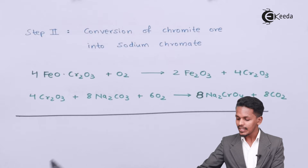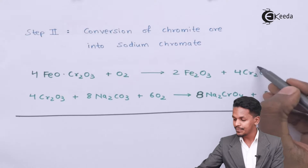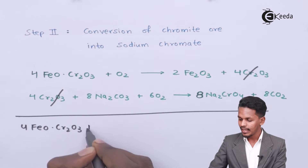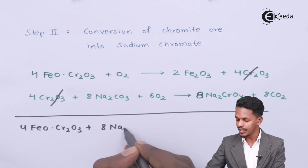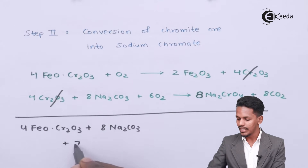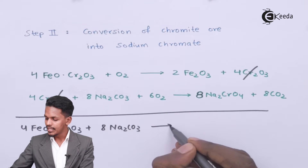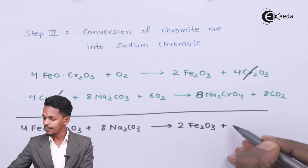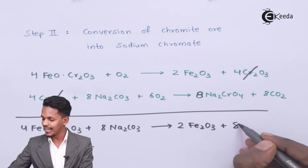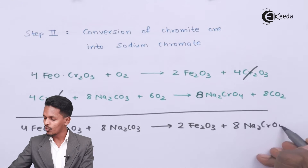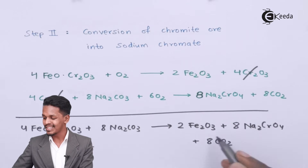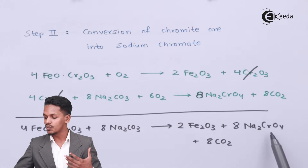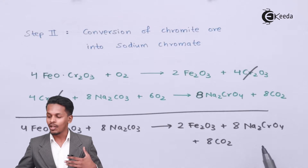The overall reaction is: 4 moles of FeOCr₂O₃ reacts with 8 moles of Na₂CO₃ along with 7 moles of O₂ to form 2 moles of Fe₂O₃ as a byproduct, 8 moles of Na₂CrO₄ as the main product, and 8 moles of CO₂, which evolves as a gas. Na₂CrO₄ is yellow in color.